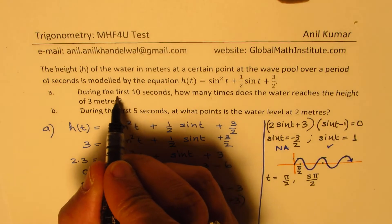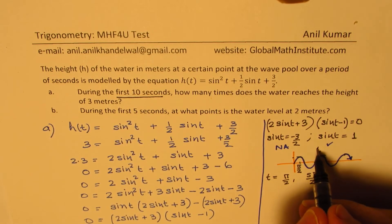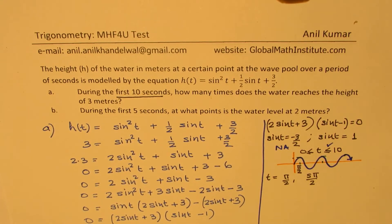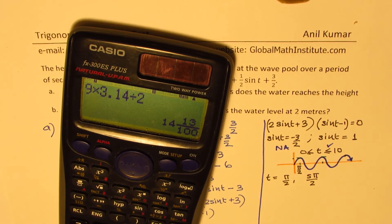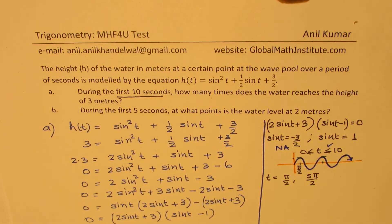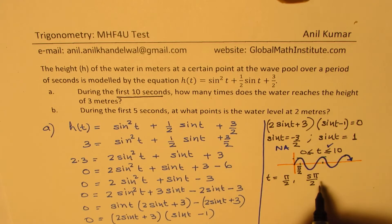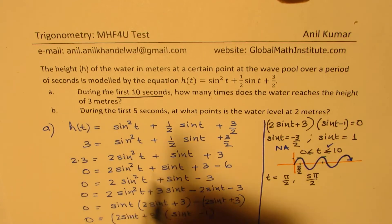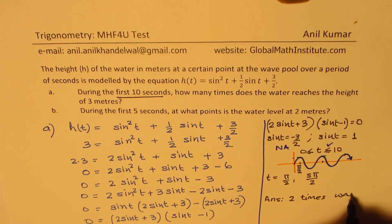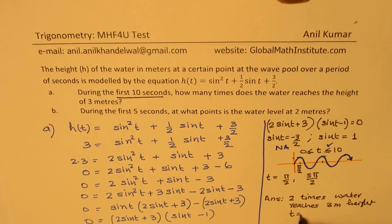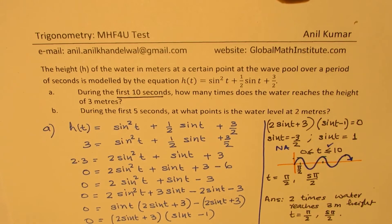Since we are interested in the first 10 seconds, we check: 9π/2 ≈ 9 × 3.14 / 2, which is more than 10 — about 14-point-something. So the only valid values are t = π/2 and t = 5π/2. Therefore, the water reaches the height of 3 meters twice. That is part A.